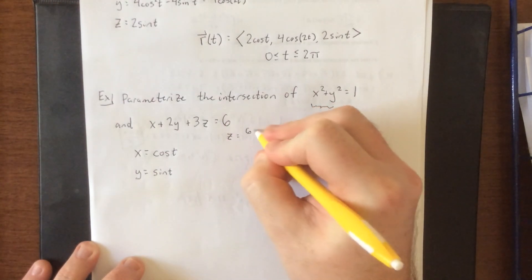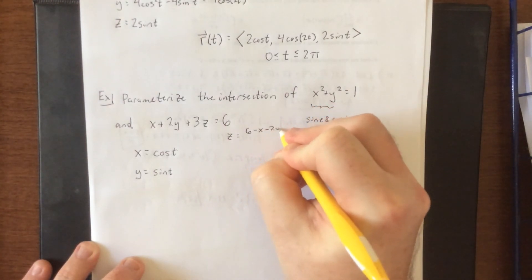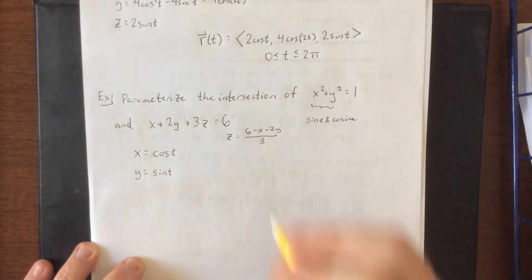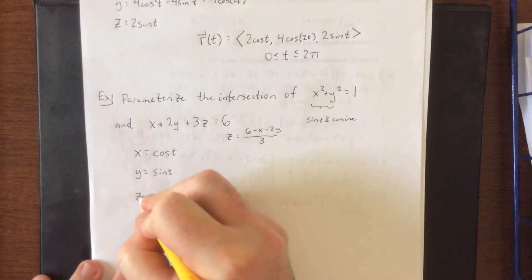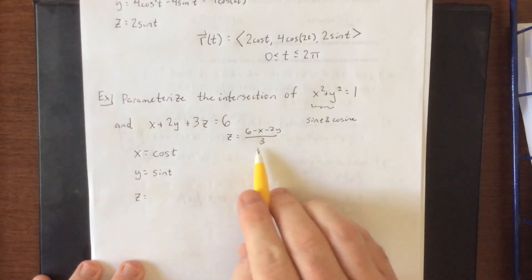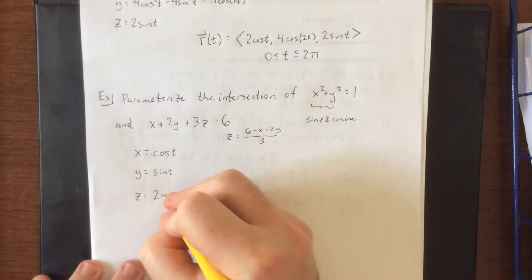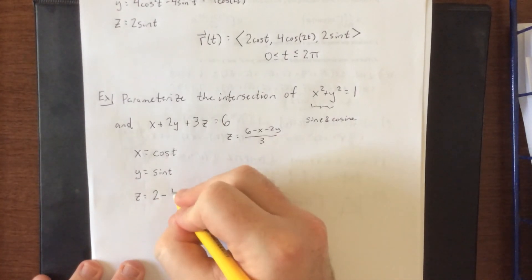Or just go ahead and do it now. So this is 6 minus x minus 2y all over 3. You're welcome to simplify that if you care to do so. And you know what? I do care to do so. So 6 over 3 is 2 minus 1 third of x.